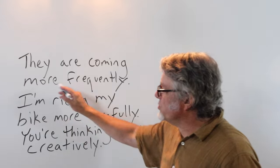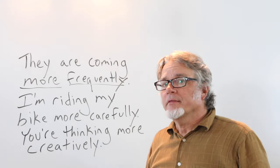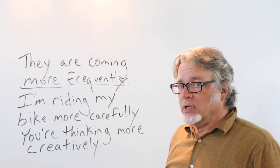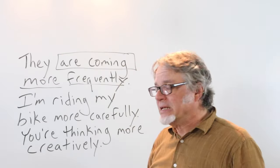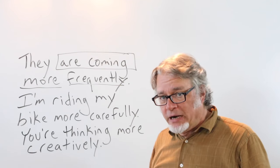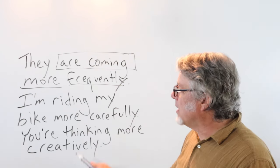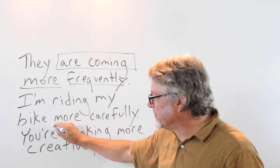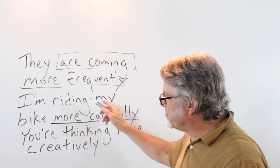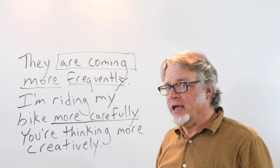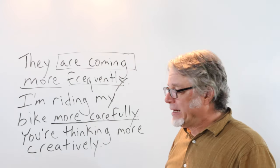All of these sentences use more and then the adverb. They are coming more frequently. More frequently modifies the verb here in the present continuous tense. The comparison is between now and in the past. I'm riding my bike more carefully. Here's the comparative adverb. Perhaps in the past I didn't ride it as carefully as I should have. But now I'm riding my bike more carefully.